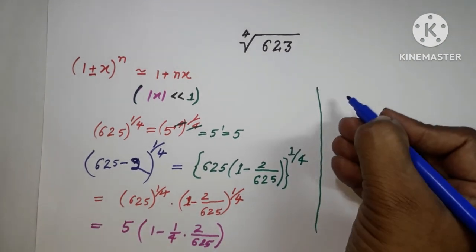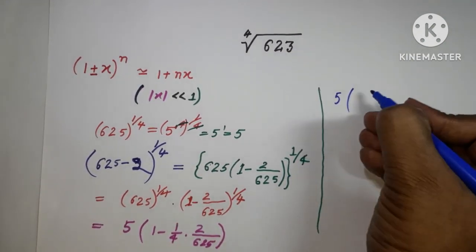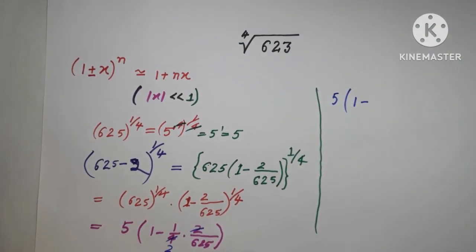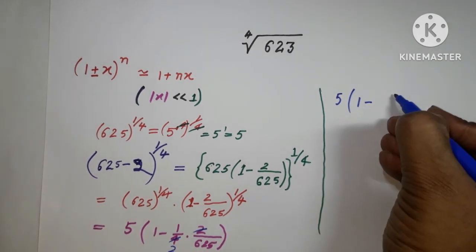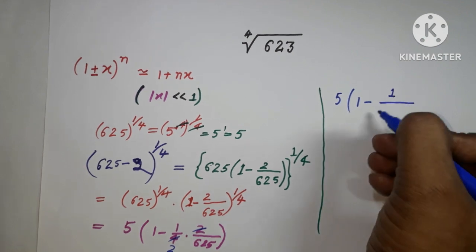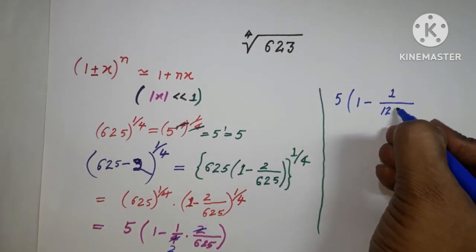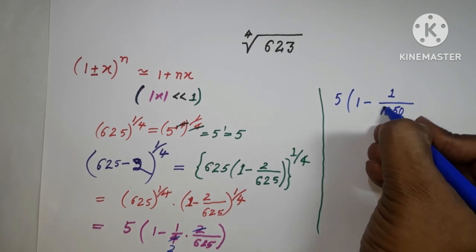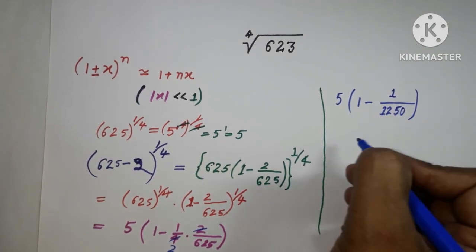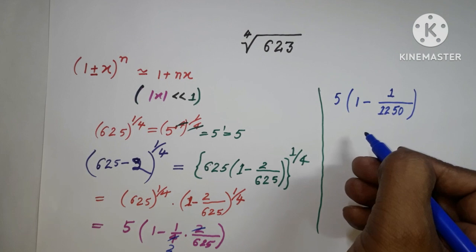The 5 is here, and 1 minus—it cancels by 2 times. So it's multiplying: 1 on the numerator, and 2×2=4 on the denominator, giving 1/4. Then 2×625=1250. So we have 5(1 - 1/1250).